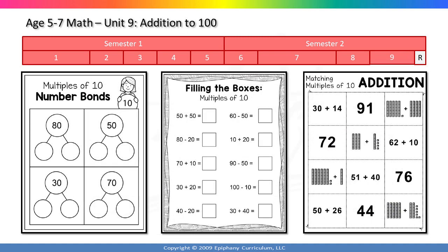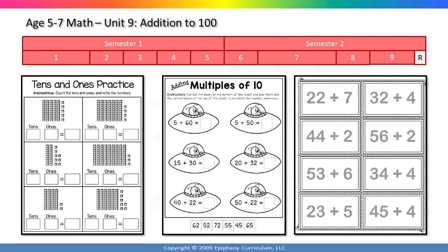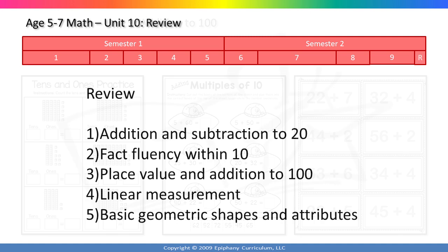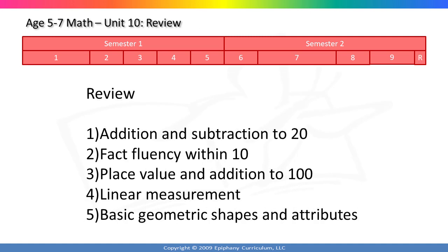The final content unit of the year focuses on addition to 100. Your child will add two-digit numbers, add multiples of ten plus one-digit number, add one-digit numbers to two-digit numbers, and also learn mental strategies for addition and subtraction. The year ends with a skills review that will ensure your child is comfortable with addition and subtraction to 20, has fact fluency within 10, understands place value, and addition to 100.